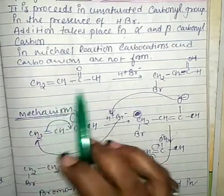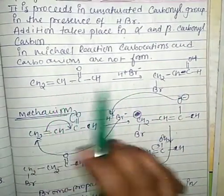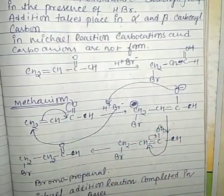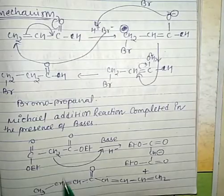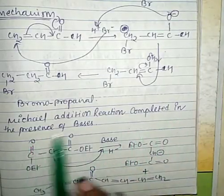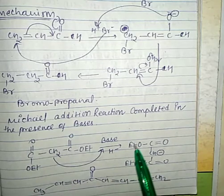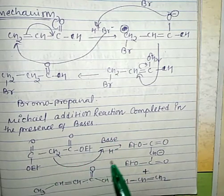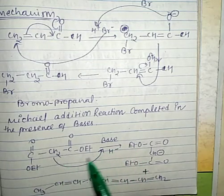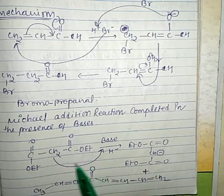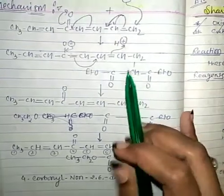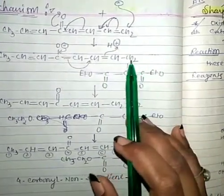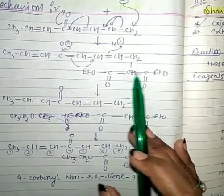Here is given the reaction of Michael reaction along with the whole mechanism. The next point is that Michael addition reaction is completed in the presence of a base. When Michael addition reaction proceeds, we get the main product in the presence of a base. The whole mechanism of Michael reaction is shown here.